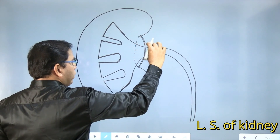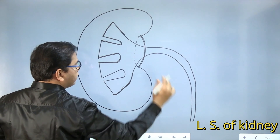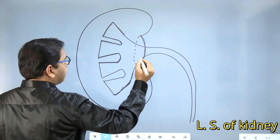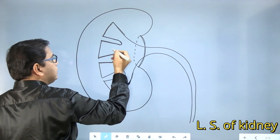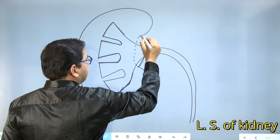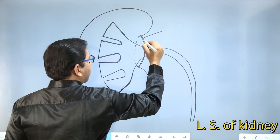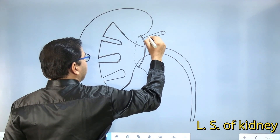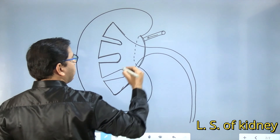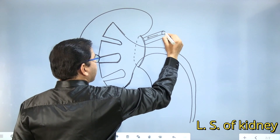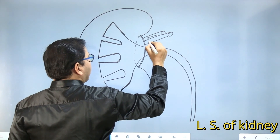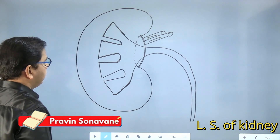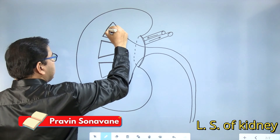Initially we are going to keep a thickness more and this thickness will gradually decrease. Now we have to show arteries and veins — the artery bringing blood inside the kidney and the vein taking blood outside the kidney. The artery has a slightly smaller diameter; the artery brings oxygenated blood inside the kidney. Then the vein takes deoxygenated blood outside the kidney.